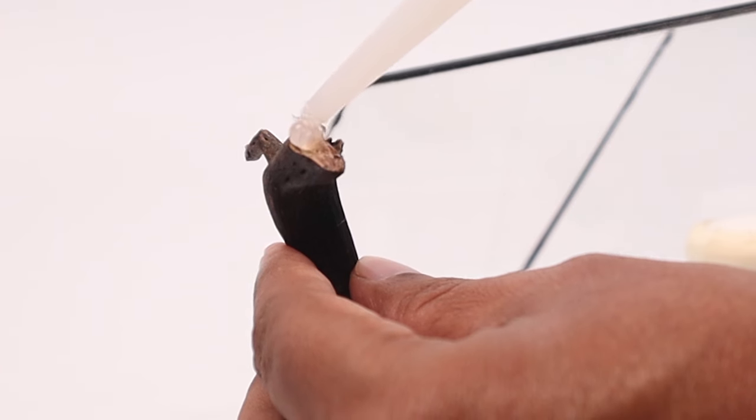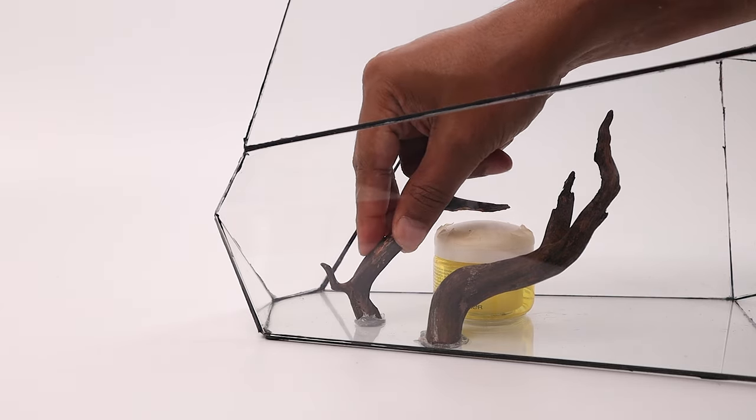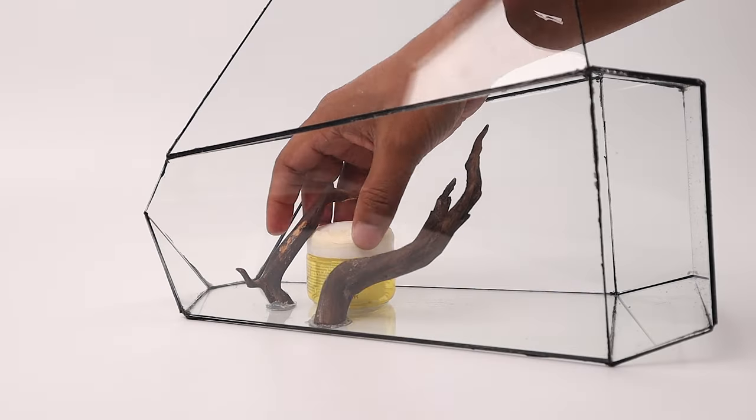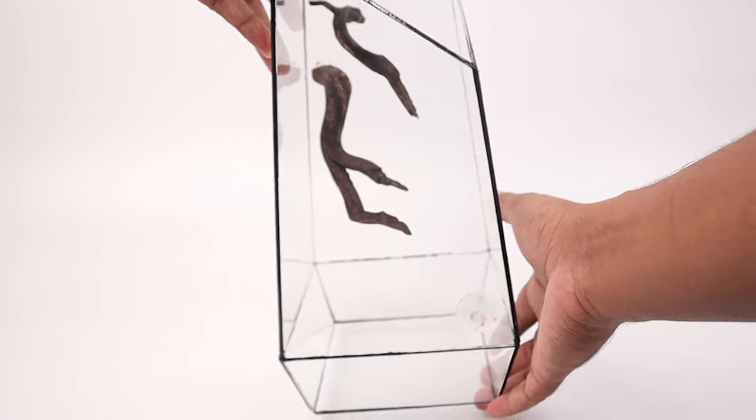Like before I apply silicon on the wood and attach it to the glass. I use a small container to hold the piece in place while it cures. I give it 24 hours to dry after which I remove the support and get ready for the next steps.